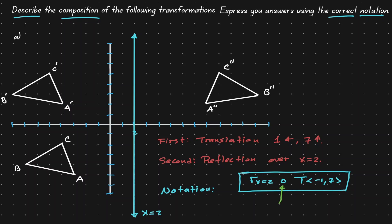Recall that this little circle right here is the notation for a composition. And the way that we read this composition is from right to left. First the translation, and then the reflection.